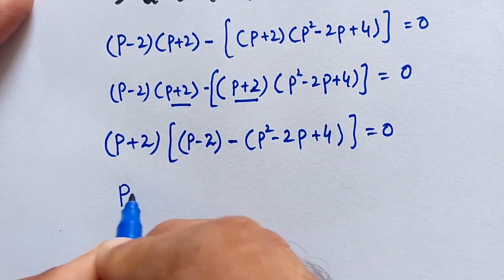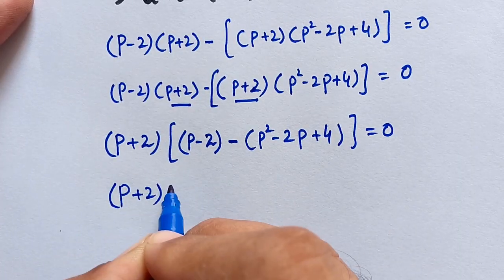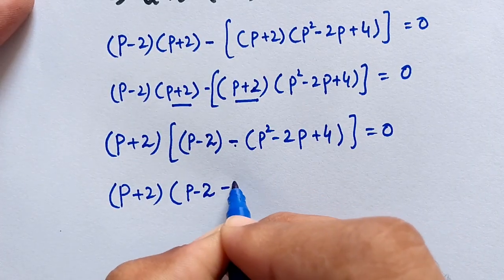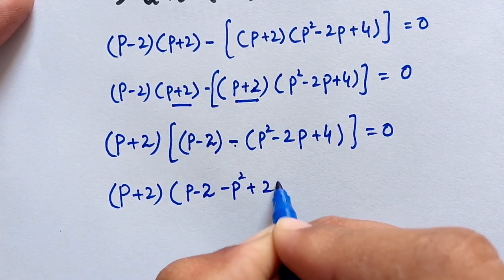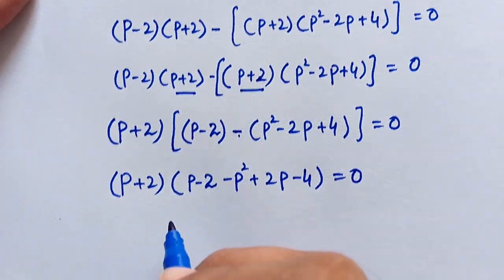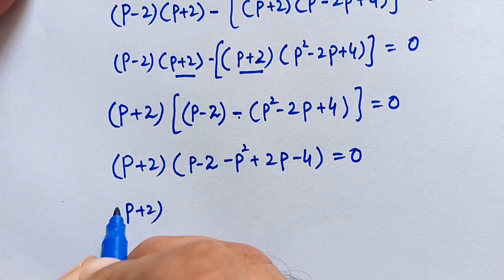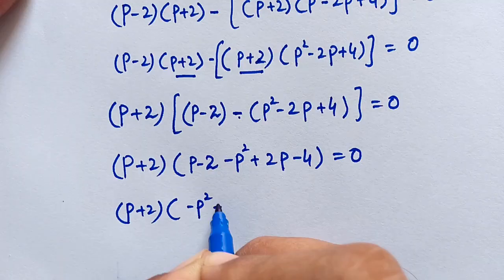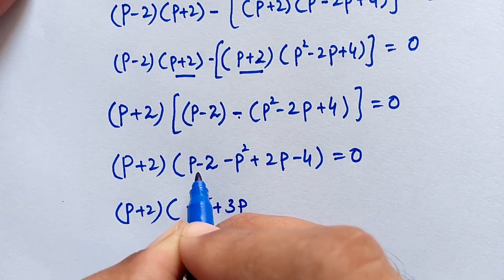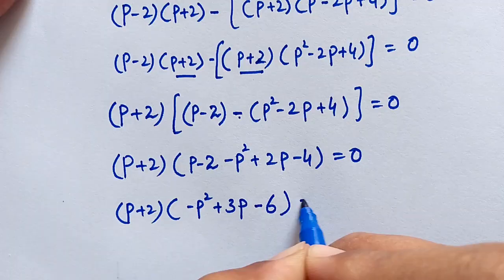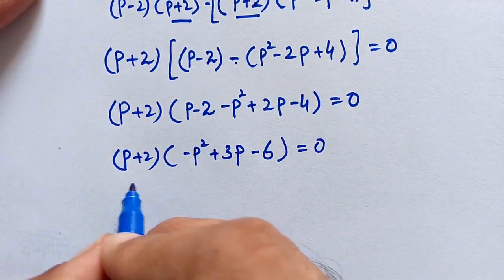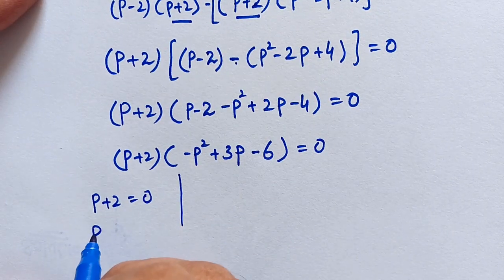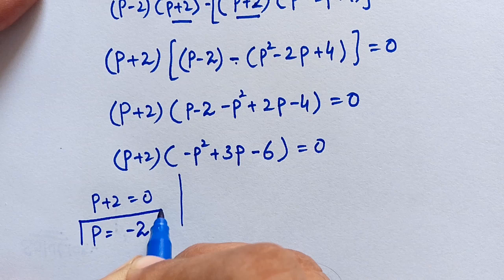So we have p plus 2 times the bracket p minus 2 plus p squared minus 2p plus 4, which simplifies to p plus 2 times p squared plus 3p minus 6, equal to 0. This gives us two cases. Case one: p plus 2 equals 0, so p equals minus 2. This is the first real solution.